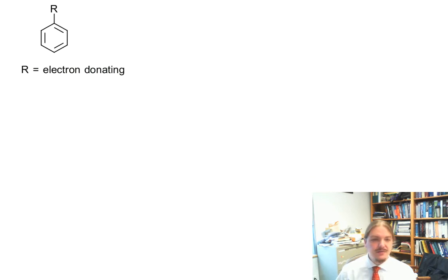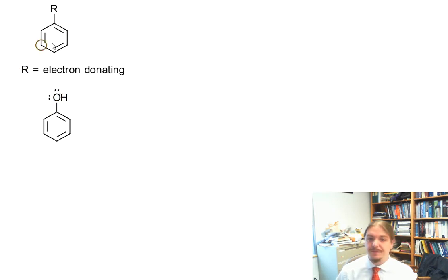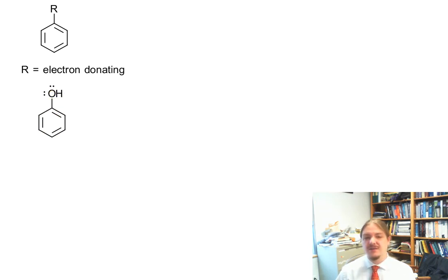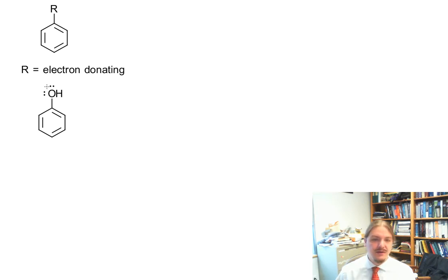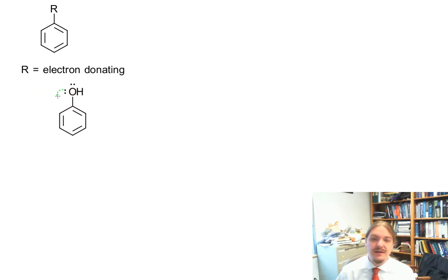If R is something that's electron donating — I'm going to pick one functional group for the sake of example — so like phenol: the alcohol group is electron donating. You might look at this initially and say, 'Wait a minute, the oxygen is electronegative,' and yes, you are right about that. But phenol is electron donating — the oxygen is electron donating by resonance — so let me draw some resonance structures for you.